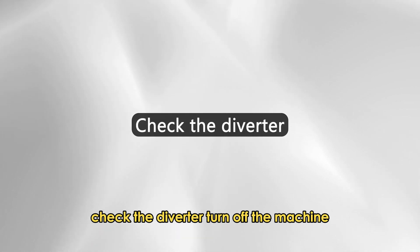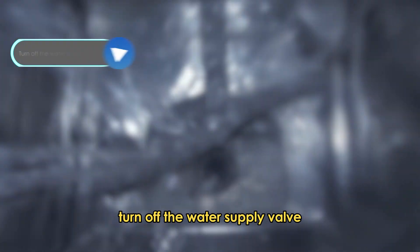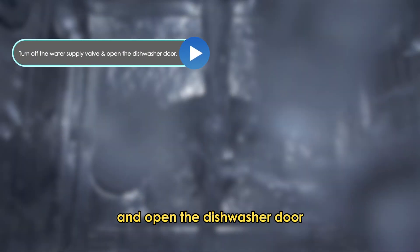Check the diverter. Turn off the machine at the circuit breaker. Turn off the water supply valve and open the dishwasher door.